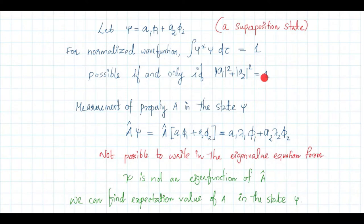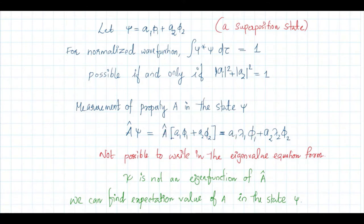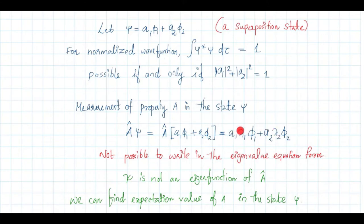A measurement of property A in state ψ gives A acting on ψ = a₁φ₁ + a₂φ₂. Since φ₁ and φ₂ are eigenfunctions of operator A, we can write this as a₁λ₁φ₁ + a₂λ₂φ₂. It is not possible to write A acting on ψ as a constant times ψ — it is not in the format of an eigenvalue equation. So ψ is not an eigenfunction of operator A; φ₁ and φ₂ are eigenfunctions, but ψ is not.